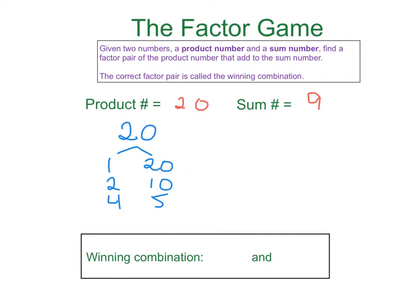I could say 5 times 4 also, but really that's not necessary because 4 and 5, 5 and 4, it's the same factor pair. The question is, which of these factor pairs is going to add to 9? I think you already know the answer is going to be the 4 and the 5. So 4 plus 5 equals 9, and that means we have our winning combination, which is 4 and 5.